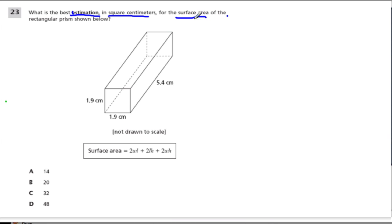They're literally saying how many squares that are one centimeter by one centimeter would fit onto the surface of this rectangular prism. Because they're asking us to estimate, we're going to get rid of the measurements 1.9 and 1.9, round them up to 2, and round 5.4 to 5. They gave us the surface area formula, and this is useful.